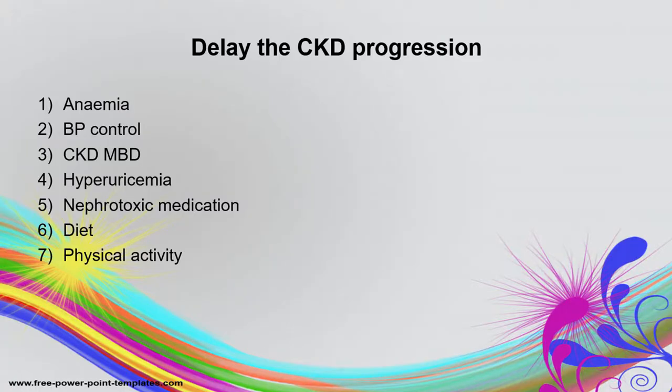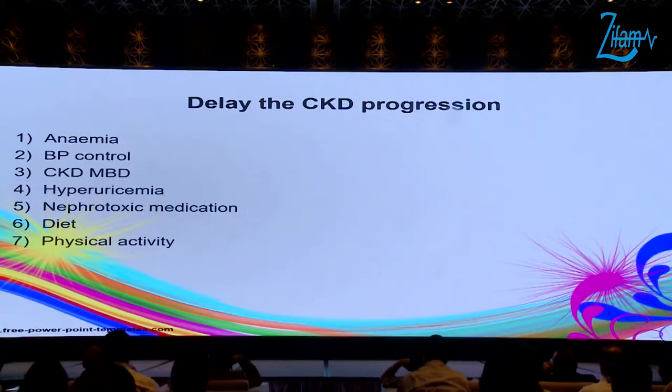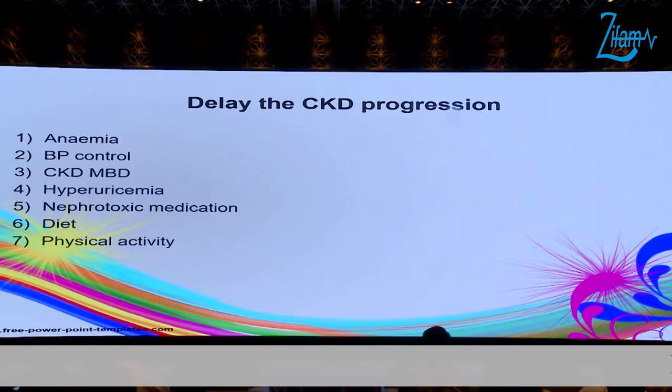How are we going to delay the progression of CKD and manage its complications? By correcting certain factors, we can delay the progression of chronic kidney disease. These factors include anemia, blood pressure control, hyperuricemia, avoidance of nephrotoxic medications, dietary factors, and physical activity.